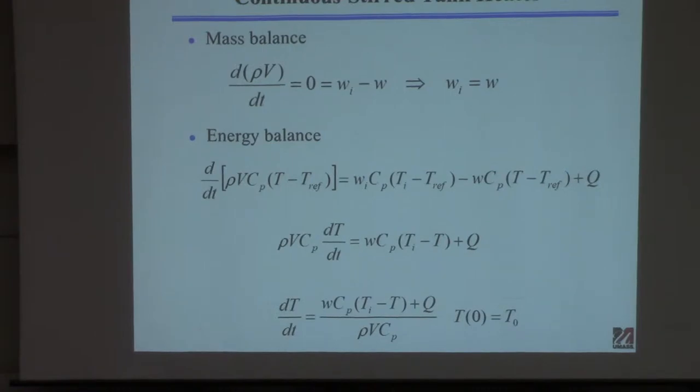So in minus out plus generation, and now you have this accumulation term. So now you have to write how much energy is accumulating in the tank. So first of all, you're going to take the derivative with respect to time, you want the term to have units like joules per second, that means the thing in here has to have units of energy, like joules or BTUs.